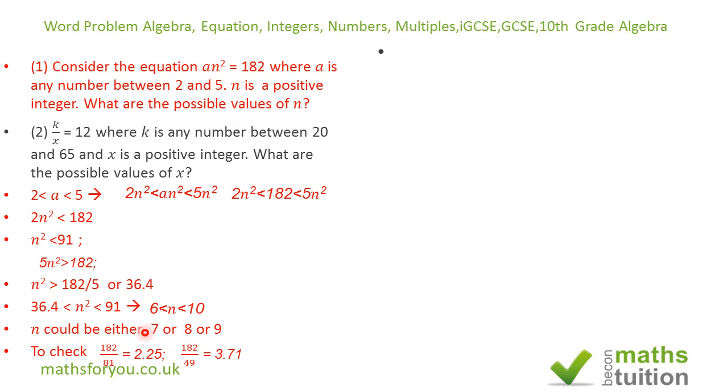If we look at the extreme ends, say 6 and 10: 182/36 = 5.06, which is more than 5. Or 182/100 = 1.82, which is very much below, so that's outside our range. So we're right.